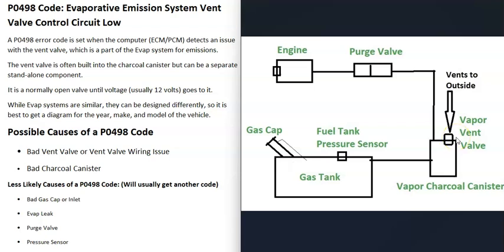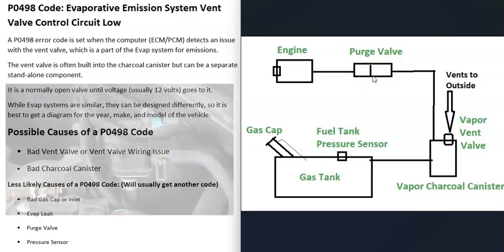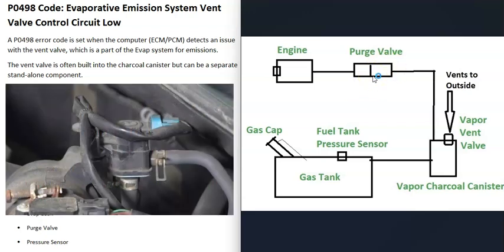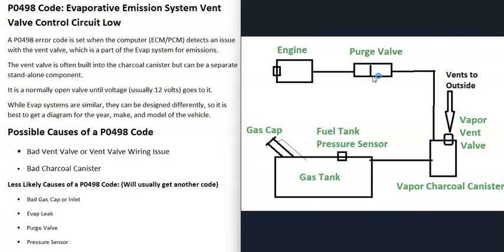A hose leaves the charcoal canister and goes up into the engine compartment where there's what's called a purge valve. The purge valve stays shut when the engine's not running so gas vapors don't escape and flood the engine. When the engine is running, at some point the computer opens the purge valve and the gas vapors go into the engine to be burnt away.